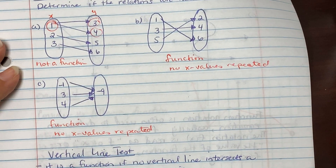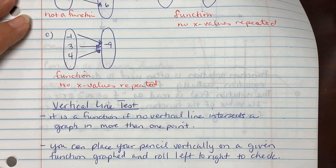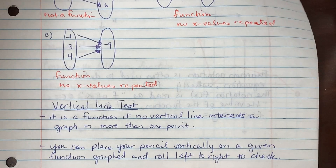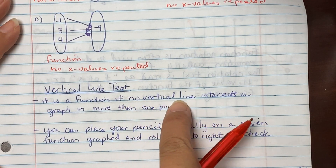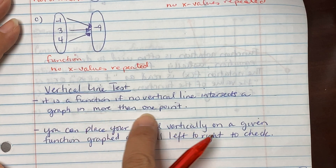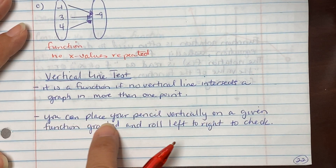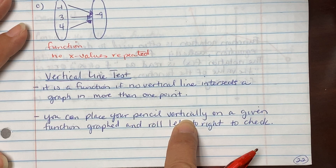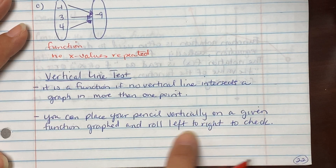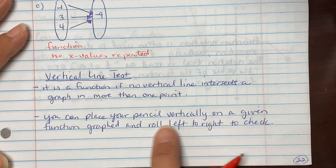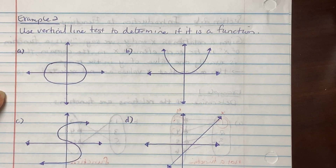Back in previous classes like Algebra 1 and Algebra 2, we talked about the vertical line test. The vertical line test states that if it is a function, there is no vertical line that intersects a graph in more than one point. A trick you can use is to place your pencil vertically on the graph and roll it left to right to check — you can use your pencil or your index finger.